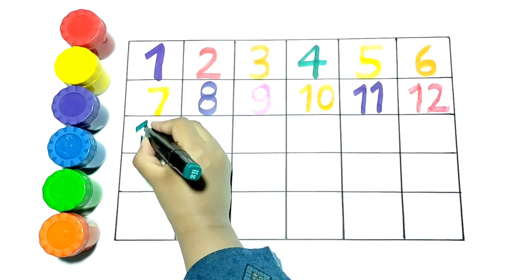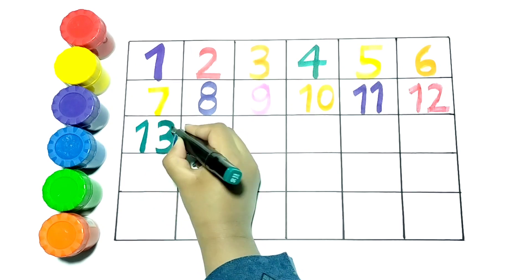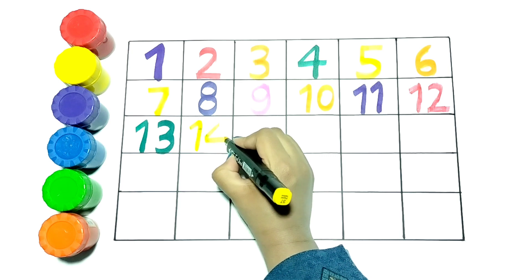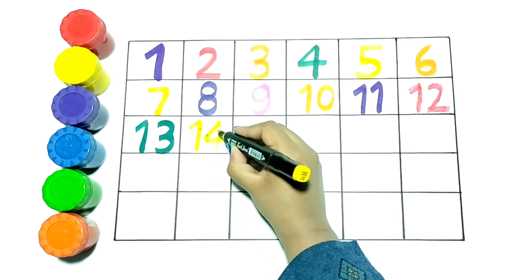Now let's write 13. Now I am writing 14. This is number 14. It is in yellow color.